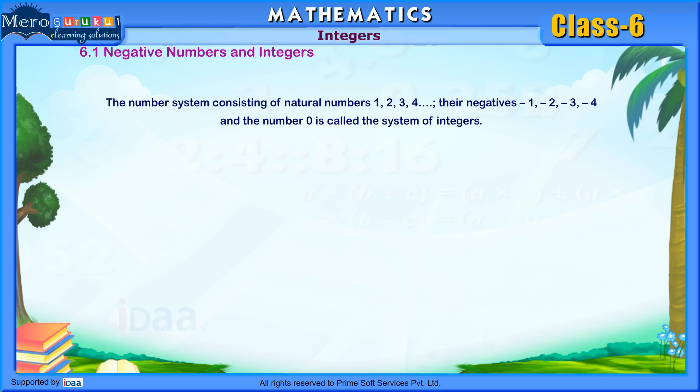The number system consisting of natural numbers 1, 2, 3, 4, and so on, their negatives, minus 1, minus 2, minus 3, minus 4, and the number 0 is called the system of integers.